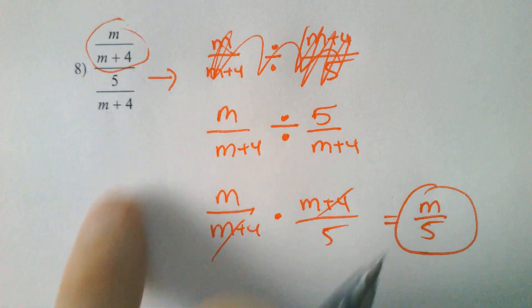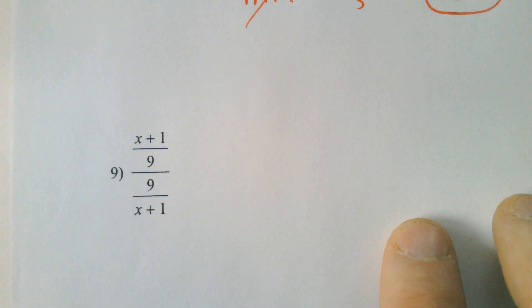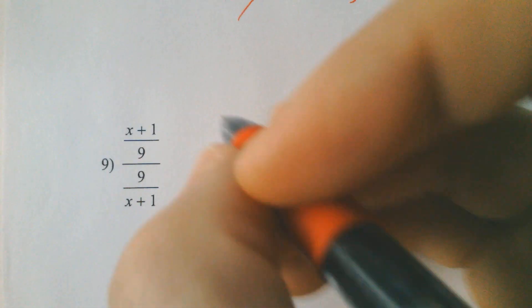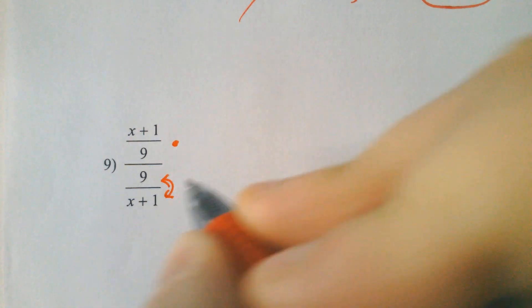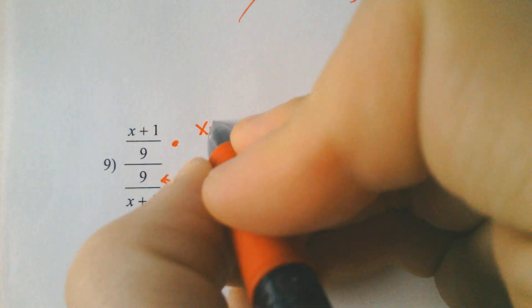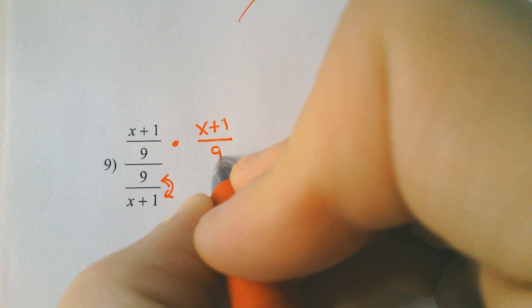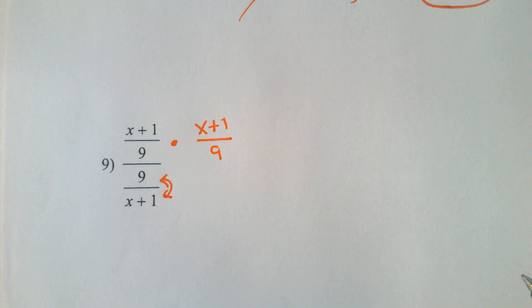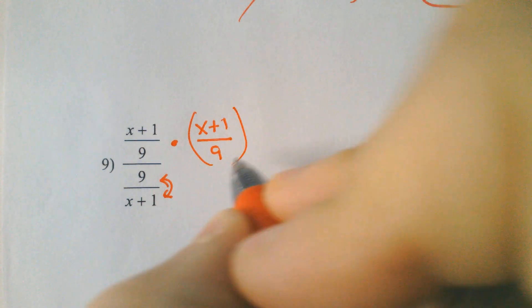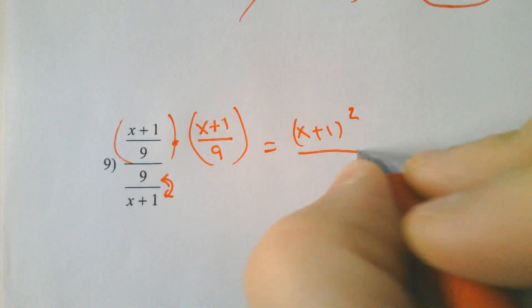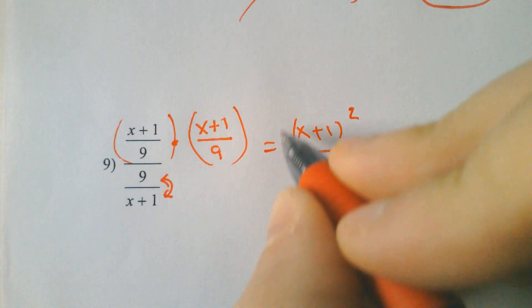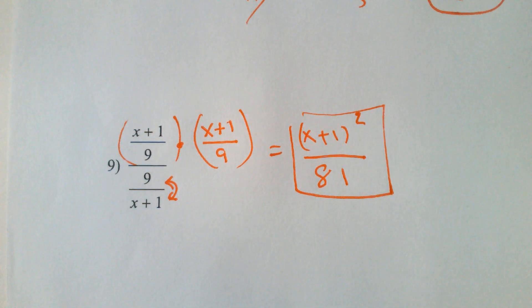Bonus problem. It's not any different than this one, but it is unique because if we had this part on the top divided by this part on the bottom, that would end up being flip and multiply. So we're going to flip these and multiply. It's going to be X plus 1 on the top and then 9 on the top. Oh no. Nothing's going to cancel. So because this happens, nothing cancels, which is unique. We get (X plus 1) squared because there's two of them and then 81 because 9 squared is 81.